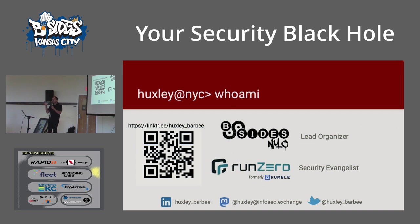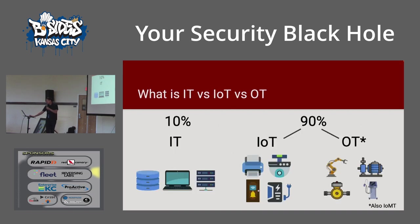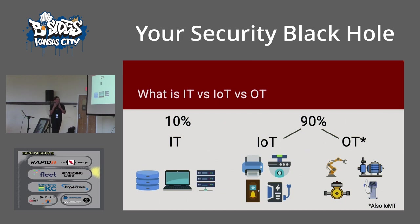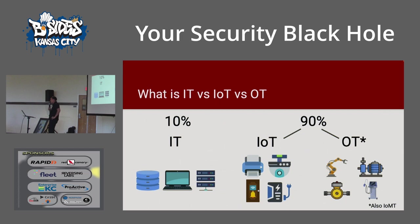Does anybody know what percentage of chips are manufactured for IT devices? 90% of chips are developed for embedded devices. Only 10% are for IT devices. This statistic boggles the mind because what it really means is that the attack surface available to the adversary on the IoT and OT side is much, much larger — even though most of us focus a lot of our time on IT.